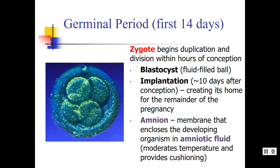The germinal period is the first about two weeks of pregnancy, when many women don't even know they're pregnant. The zygote — the united egg and sperm — begins to duplicate and divide within hours of conception. It's pretty amazing how quickly this process starts.